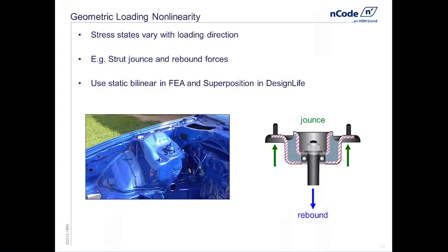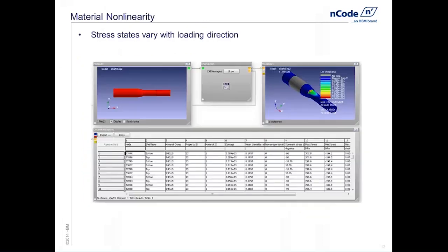Just to finish up the previous example: the only way we'll get trustworthy fatigue results is if we feed the fatigue analysis trustworthy stresses. In this case of local plasticity, we were able to get Design Life to correct for that material nonlinearity for us, thus simplifying our FEA — we were able to use linear FEA and let Design Life correct for the material nonlinearity.